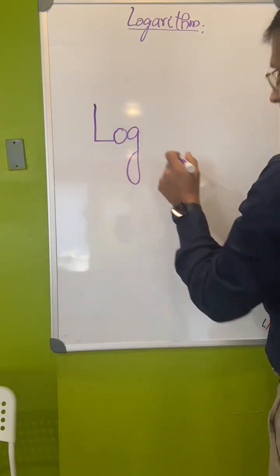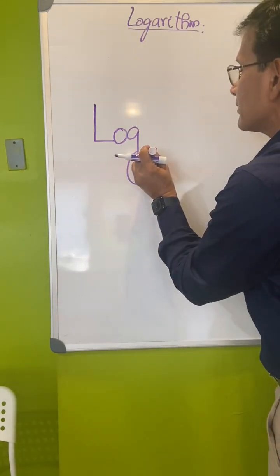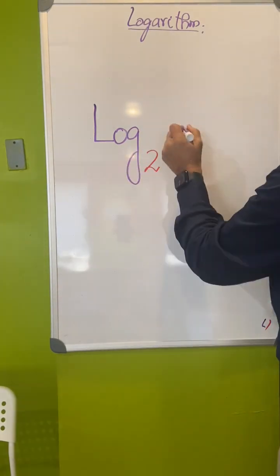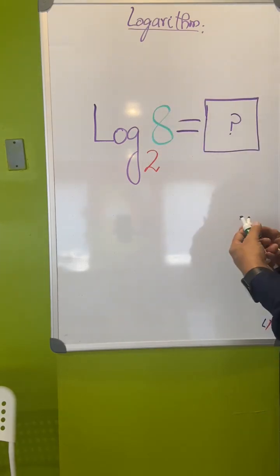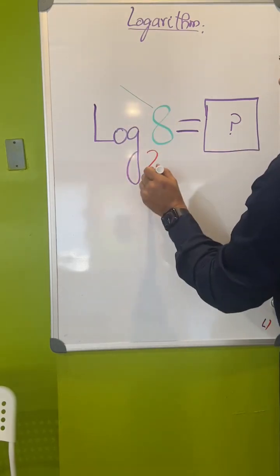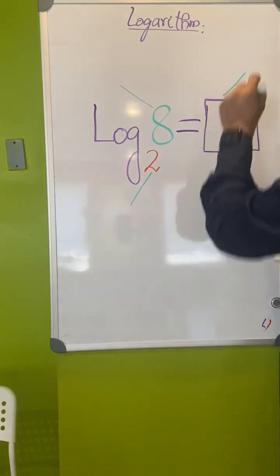When we have log, we have something called base. Base, let's say 2, equal to 8. Now let's understand that there are three things in this. One is this, another is this, and the third one is this.